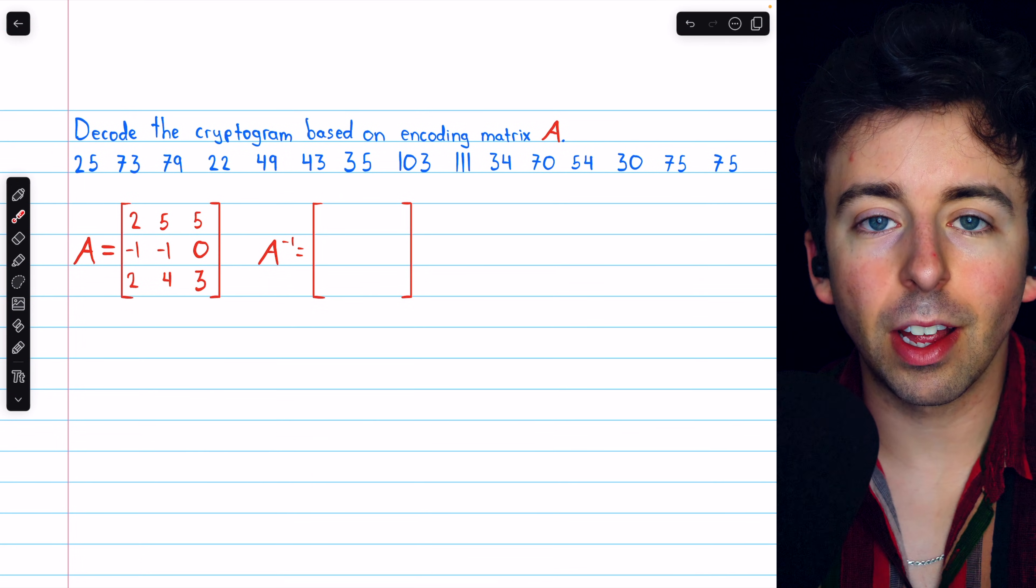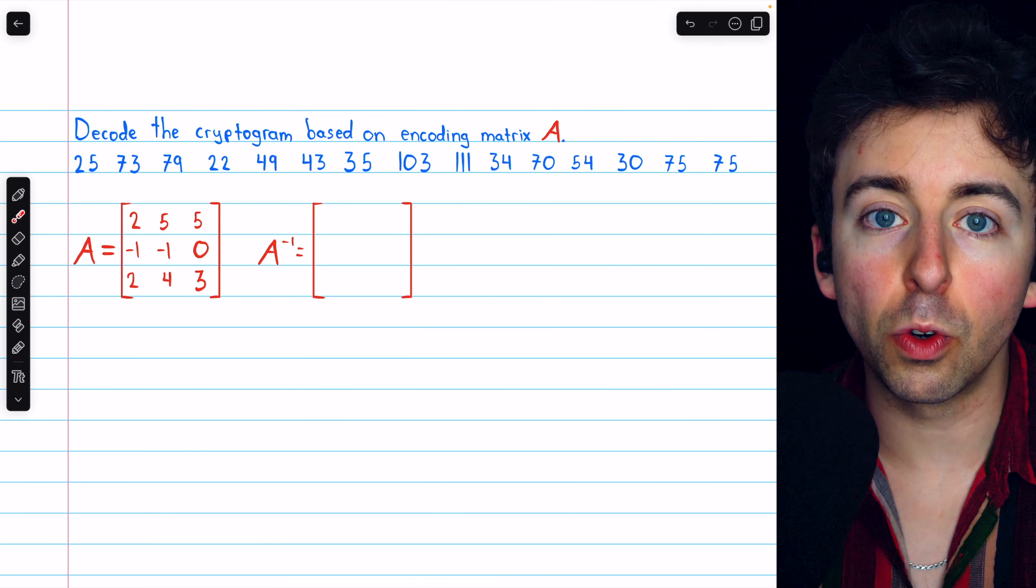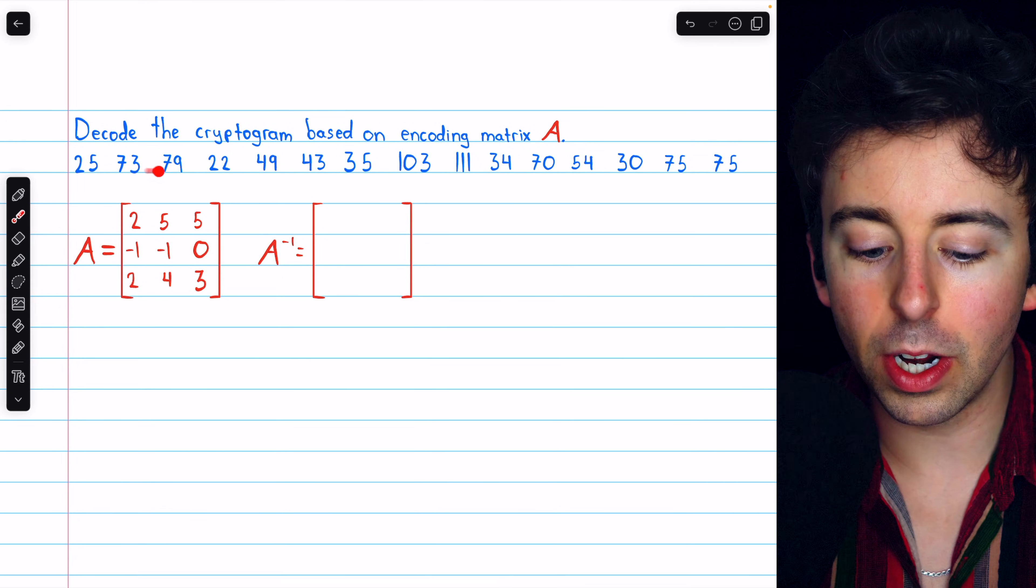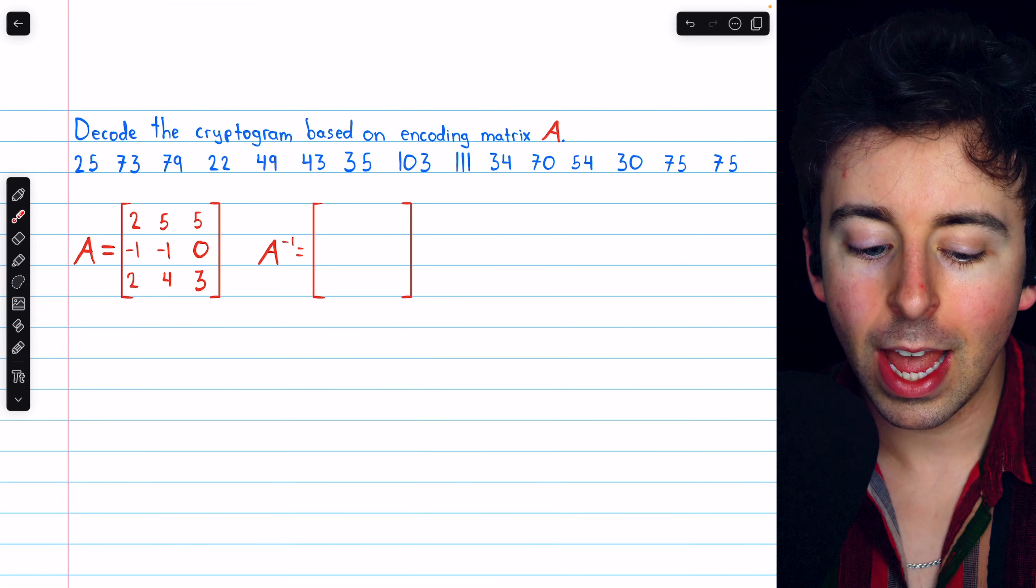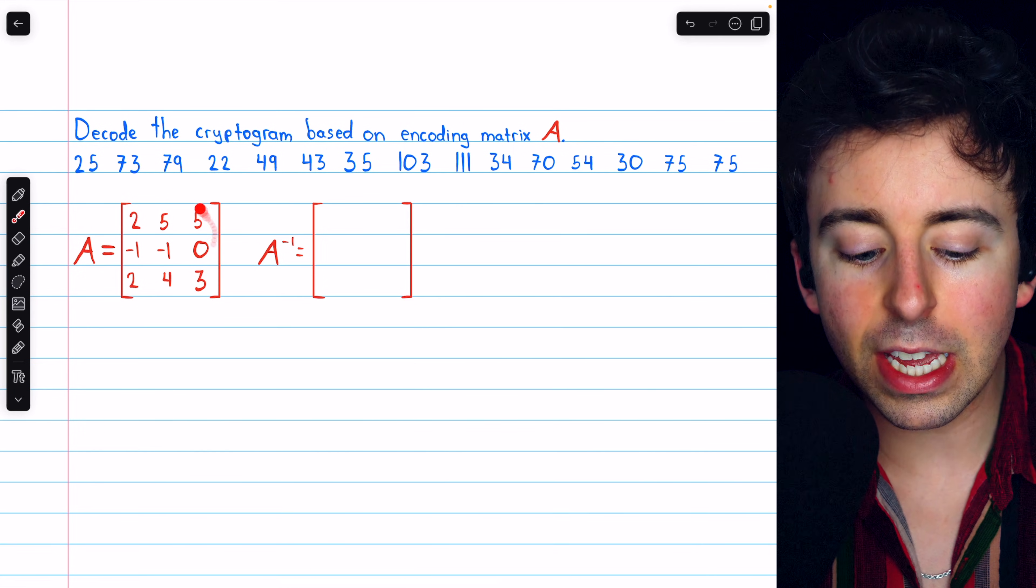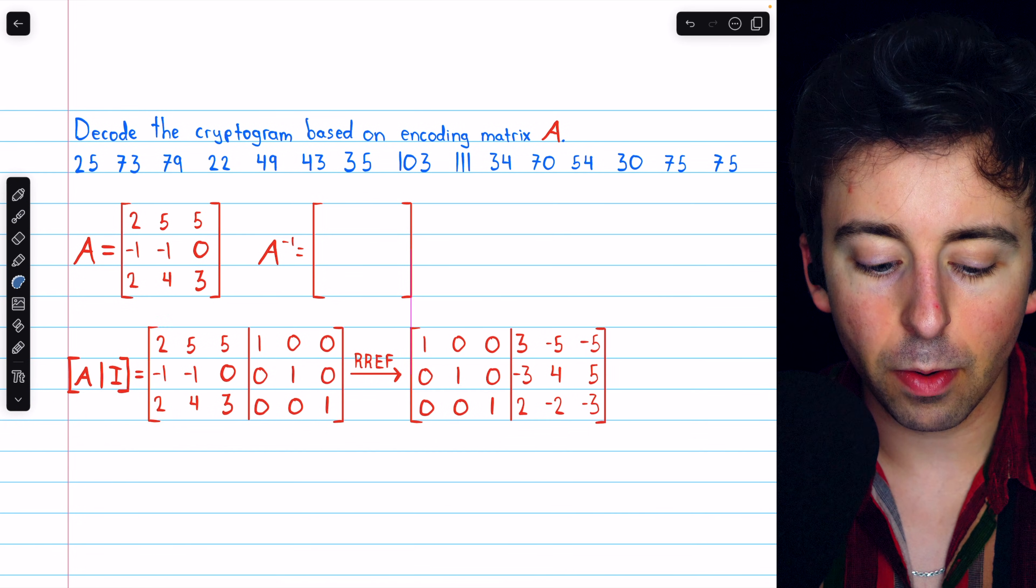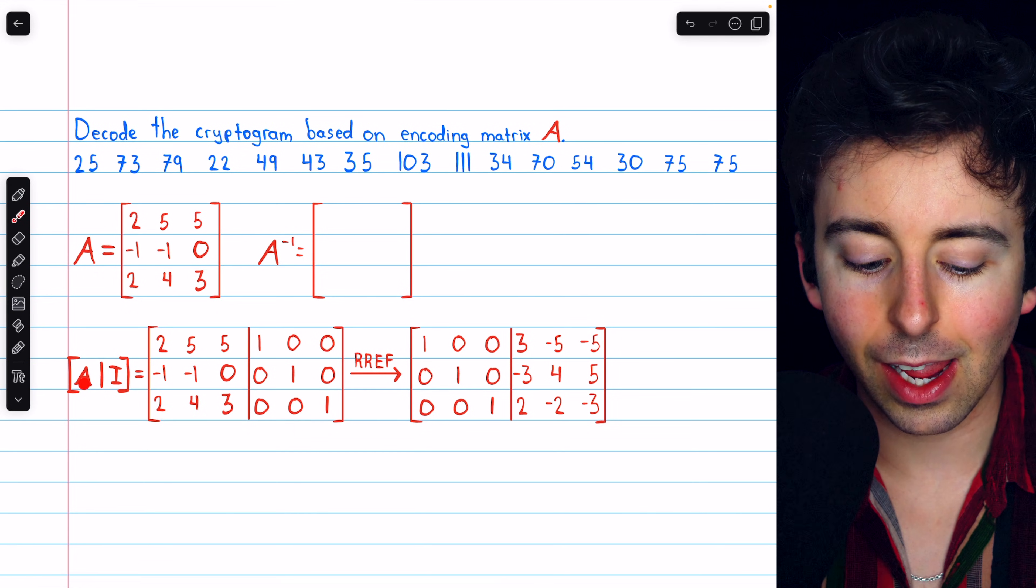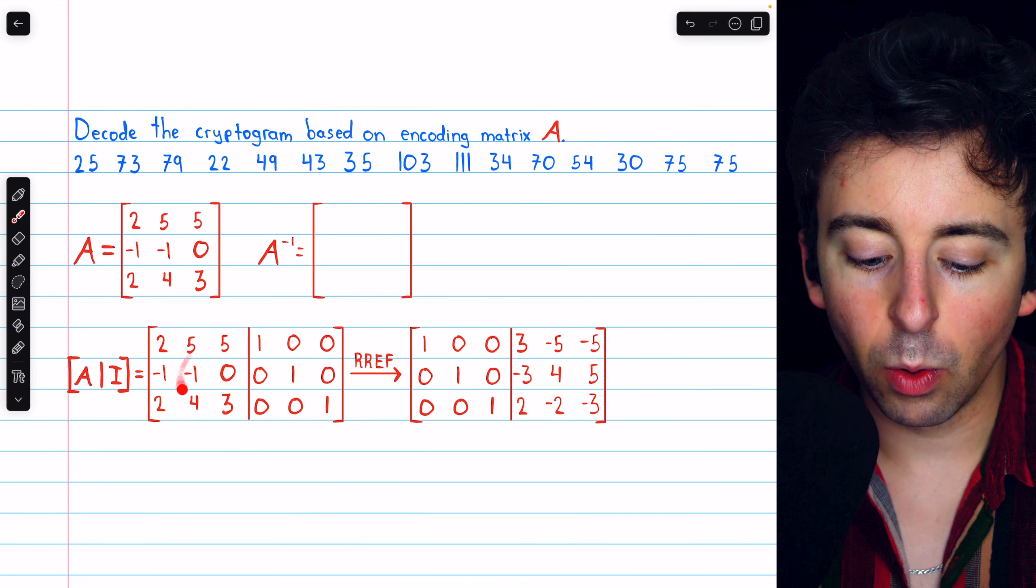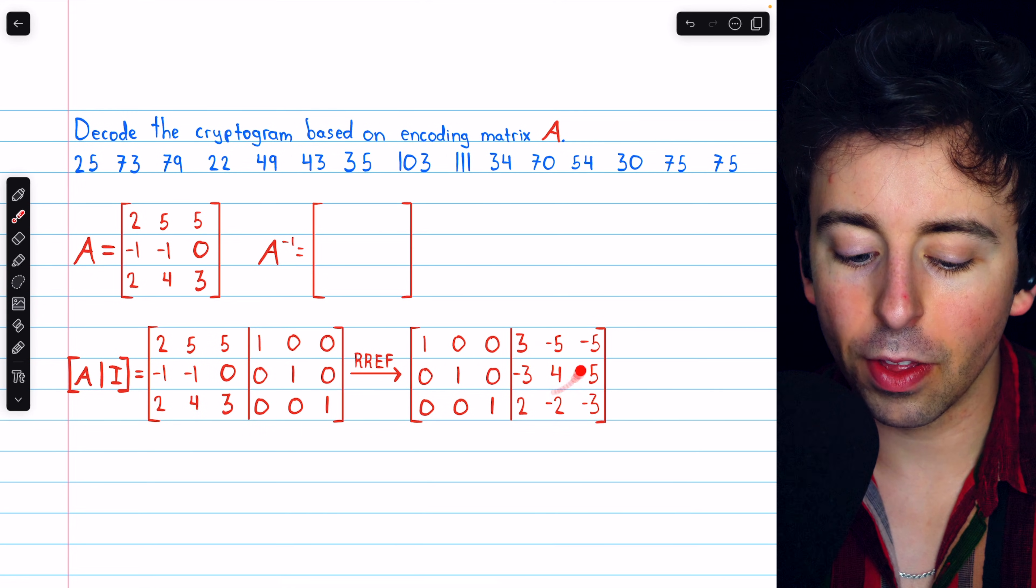You can try this yourself to decode the cryptogram that we just made, but let's try this out on a new cryptogram using the same encoding matrix A. So this is an encoded message. This is a cryptogram, and we're going to decode it. To do that, we need to find the inverse of the encoding matrix A. To find the inverse, we will create this augmented matrix between A and the identity, and then perform Gauss-Jordan elimination. Once we do that, we get the identity on the left, and the inverse of A is on the right.